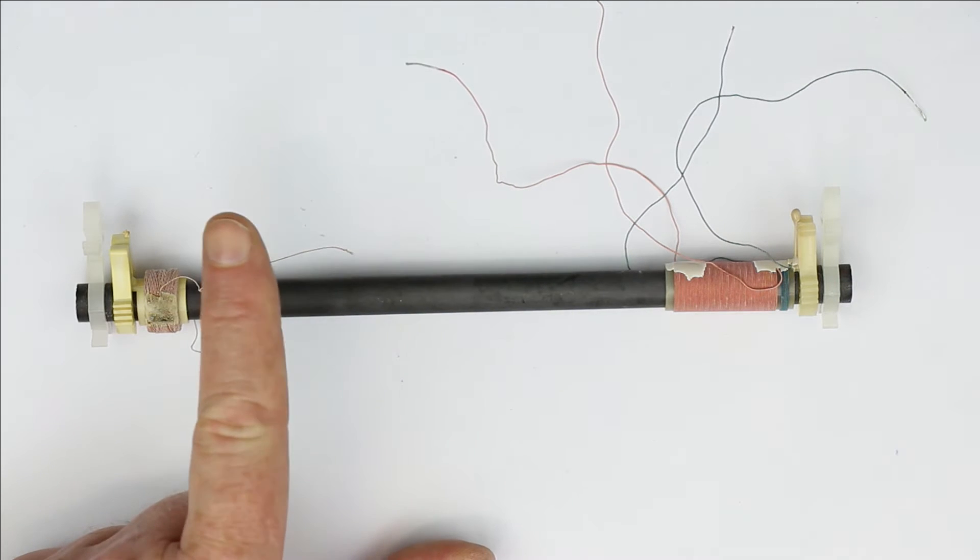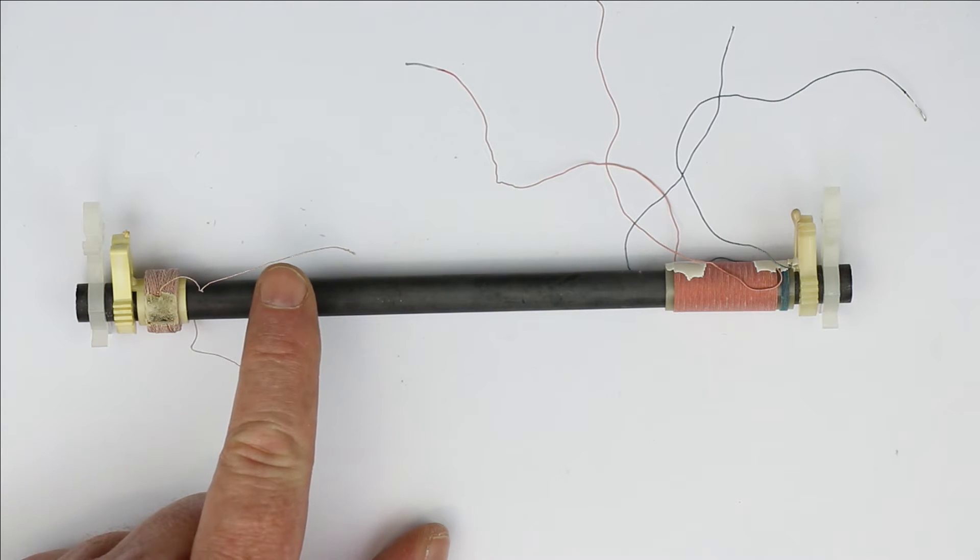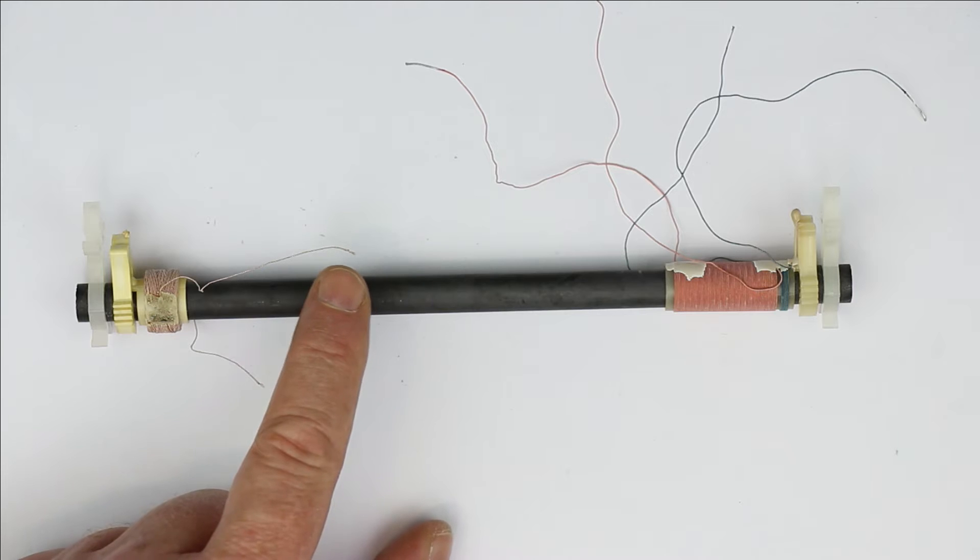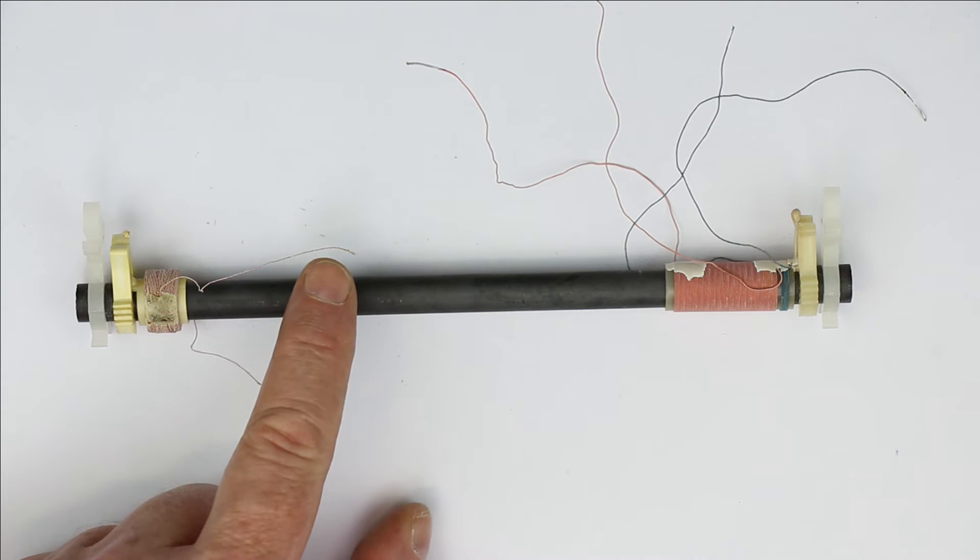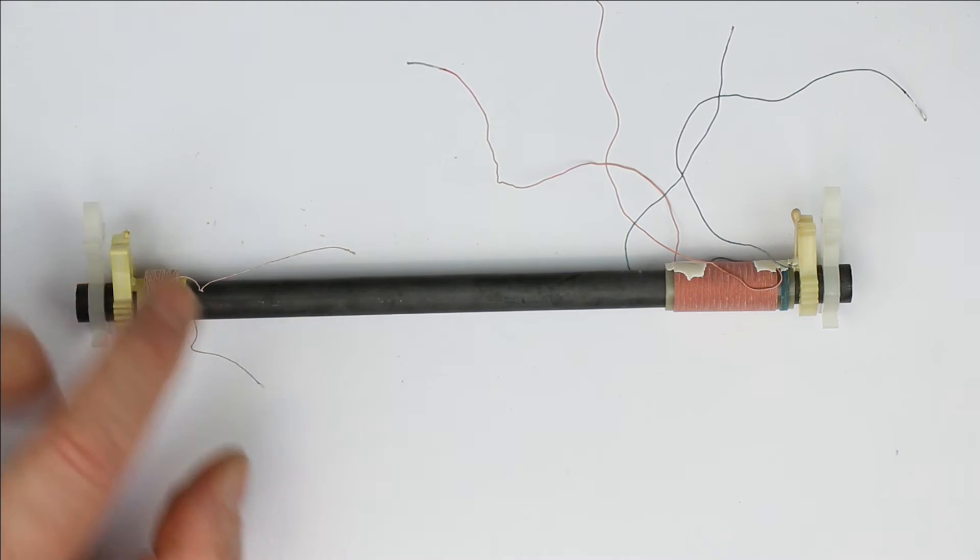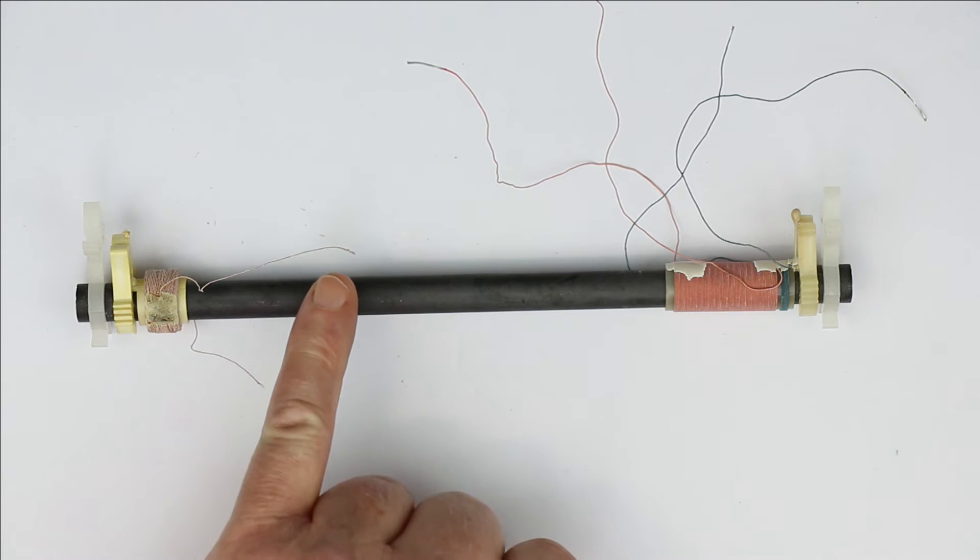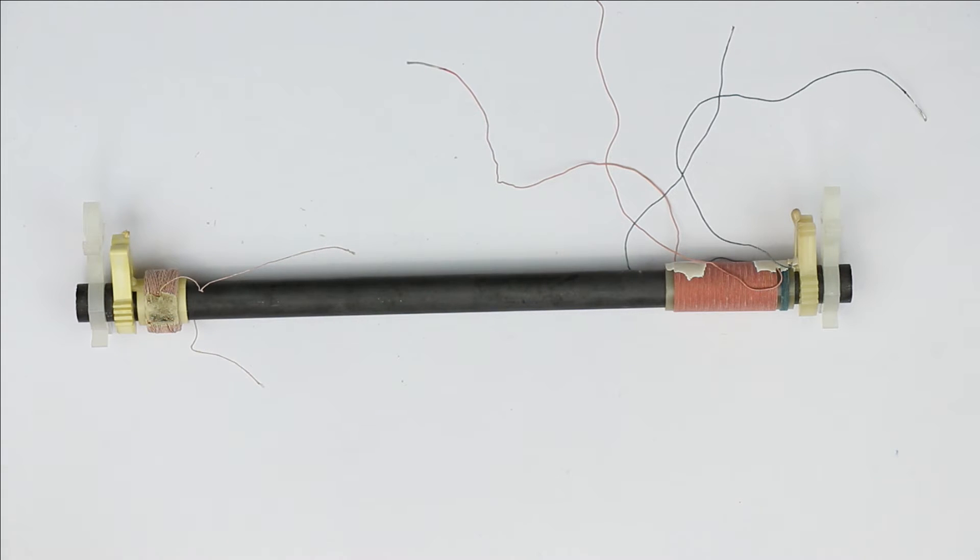And with modern litz wire, it consists of copper wire, of course. And each single strand of the copper wire is coated. Formally, it was enamel, but modern ones use polyurethane. And polyurethane melts or evaporates at temperatures above 350 degrees.